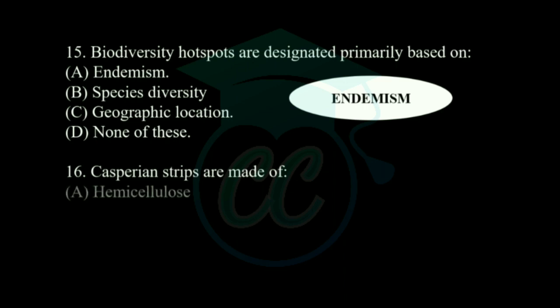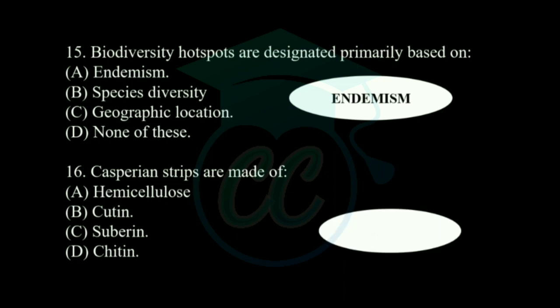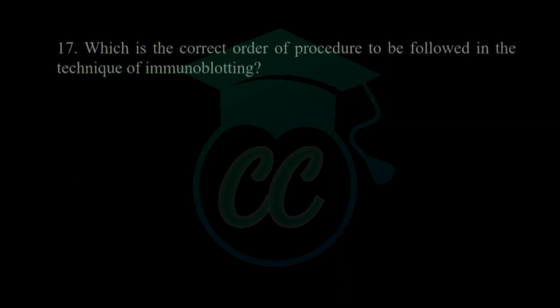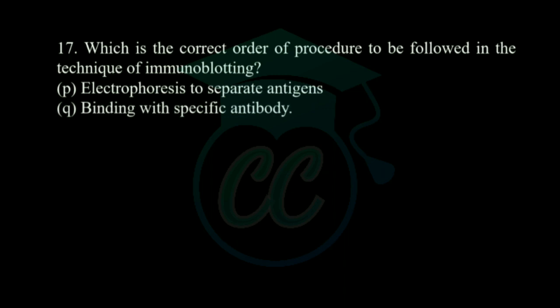Next question: Casparian strips are made of — options: hemicellulose, cutin, suberin, and chitin. The correct answer is Casparian strips are made of suberin. Next question: which is the correct order of procedure to be followed in the technique of immunoblotting? The steps listed are: electrophoresis to separate antigen, binding with specific antibody, adhesion of secondary antibody, and production of replica of the gel on nitrocellulose paper.